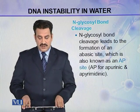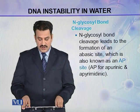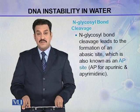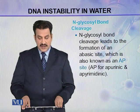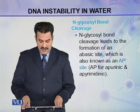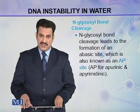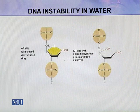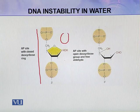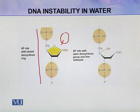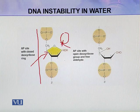The second type is the N-glycosyl bond. N-glycosyl bond cleavage leads to the formation of an abasic site, also known as an AP site, where AP stands for apurinic or apyrimidinic. Here you can see two examples of AP sites. In a normal strand, one nitrogenous base attached to the deoxyribose sugar through an N-glycosyl linkage has been broken off, producing the AP site.